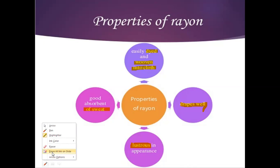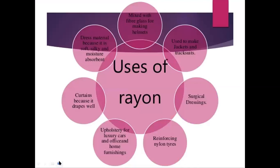Rayon mixed with fiberglass can be used for making helmets. It is also used to make jackets and track suits, and in surgical dressing — for dressing patients after operations or surgery. It is also used for reinforcing nylon tires, and for upholstery in luxury cars, office and home furnishing. It is used for shining appearance, finishing, and making curtains because it drapes easily.